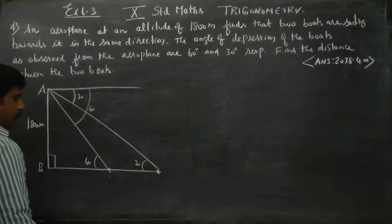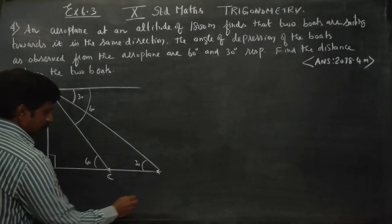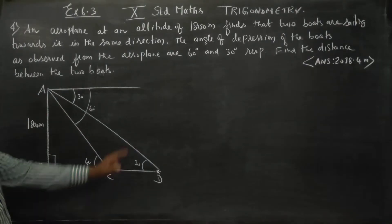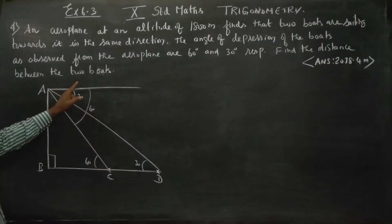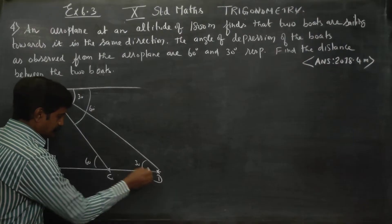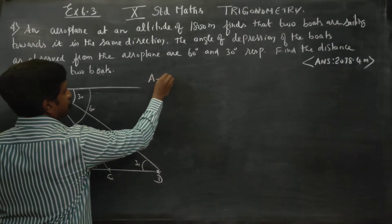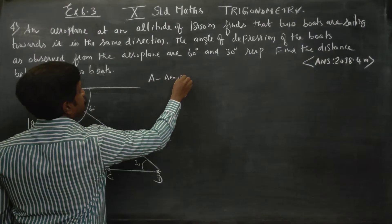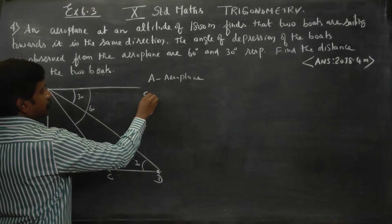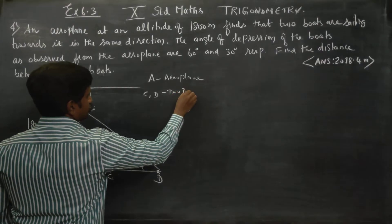The two boats are in the same place below. First boat is C and second boat is D. We need to find the distance between the two boats. C and D are the two boats.